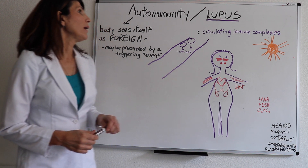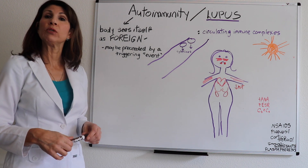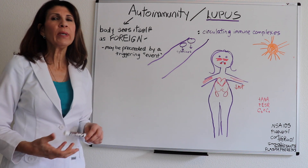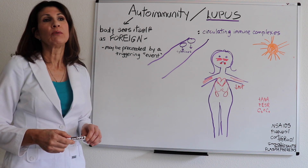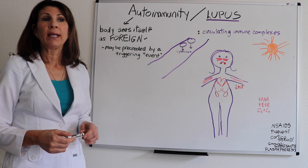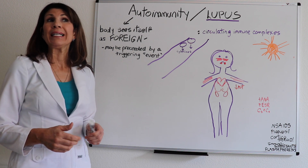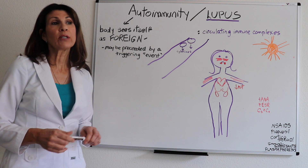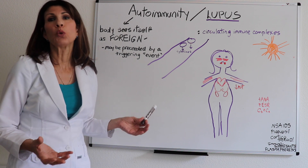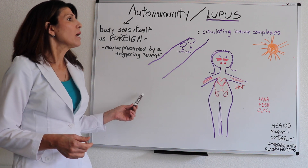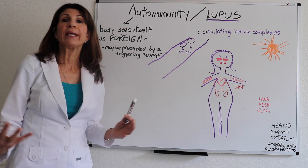Now we're going to take a look at a specific type 3 hypersensitivity disorder and autoimmune disease called lupus. Why are we looking at that in particular? First of all, it's pretty common, and second of all, it's a good prototype in order to look at the use and implications of corticosteroid use. These patients are not going to be admitted into acute care because of arthritic pain.